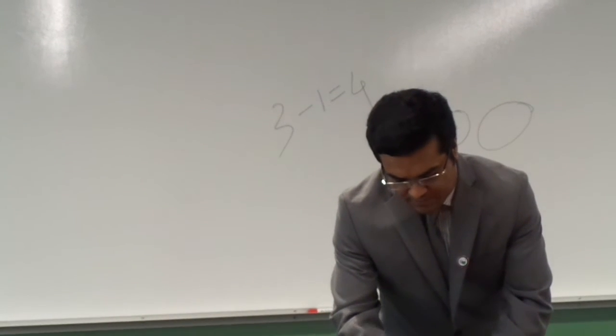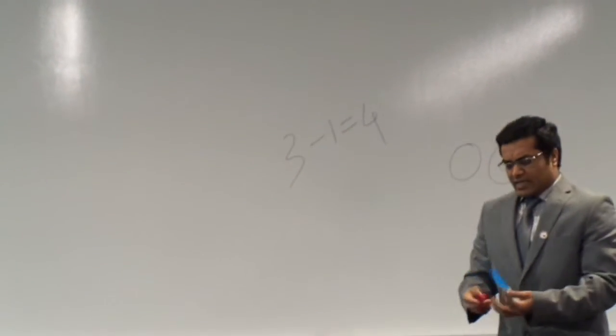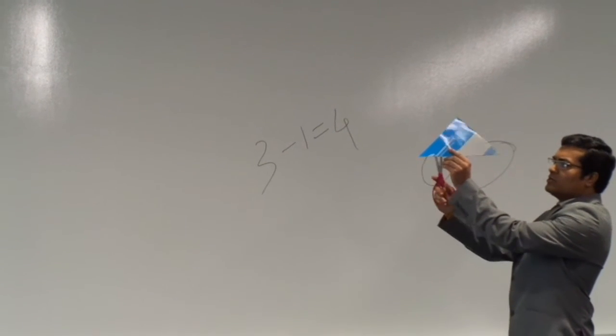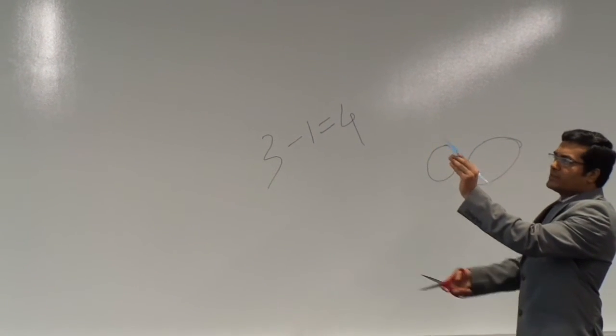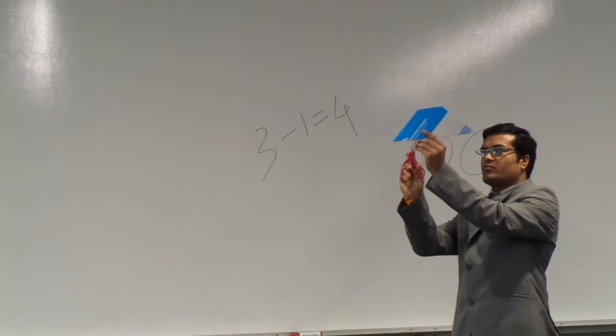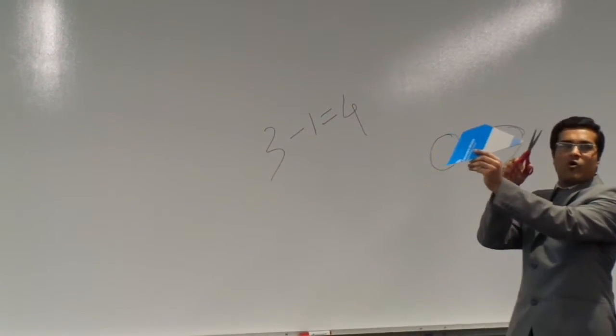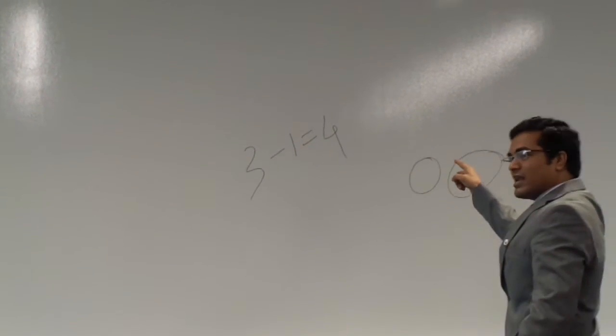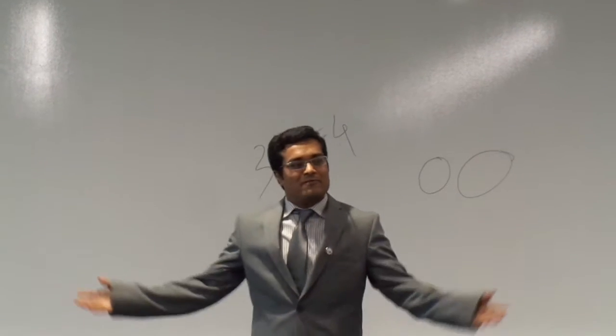I have this triangle. Just count the number of corners. Follow me. One, two, three. Let me cut the one. Just count it. One, two, three, four. But this proves three minus one equals four.